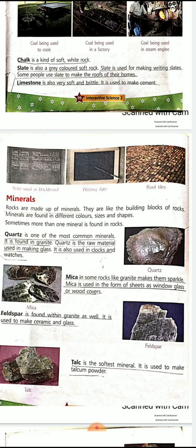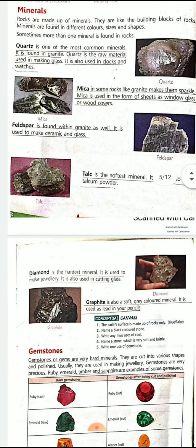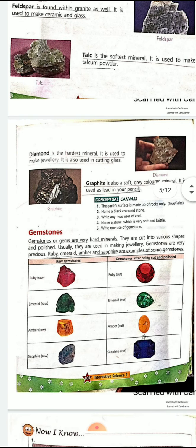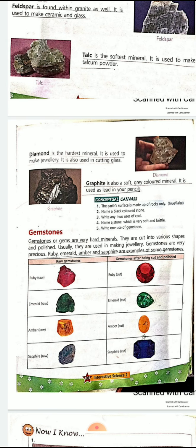Talc is the softest mineral and is used to make talcum powder. Diamond is the hardest mineral on earth and is generally used for cutting glass. Graphite is also a soft mineral. We will be reading more about these minerals and later about gemstones in the next class.